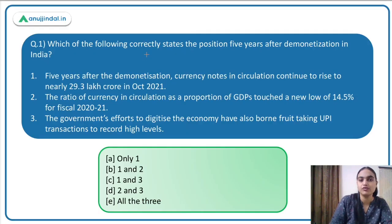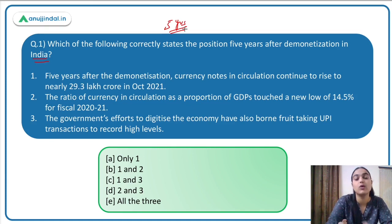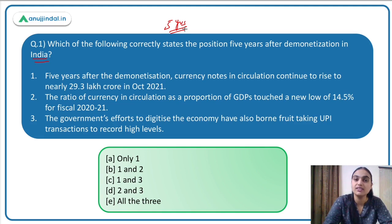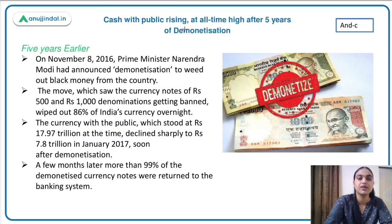The first question asks: which of the following correctly states the position five years after demonetization in India? Recently we completed five years since demonetization, when the ₹500 and ₹1000 notes were banned. The basic objective behind demonetization was to tackle the problem of black money and give a big boost to digital payments. Recently, some important facts came out in the news about cash in circulation and the status of digital transactions.